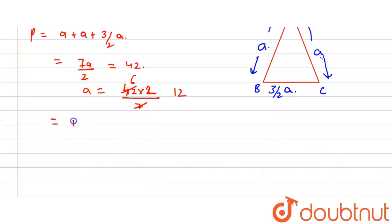So side length is 12, 12. Next is 3 by 2 multiplied by 12, that is equal to 18. So our three sides are 12, 12, and 18.